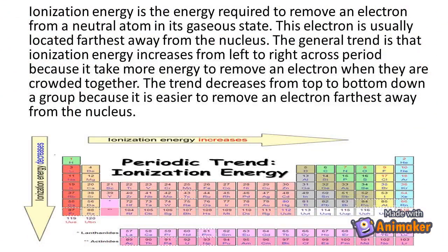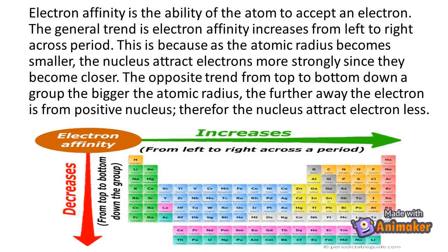Ionization energy is the energy required to remove an electron from a neutral atom in its gaseous state. This electron is usually located farthest away from the nucleus. The general trend is that ionization energy increases from left to right across a period, because it takes more energy to remove an electron when they are crowded together. The trend decreases from top to bottom down a group, because it is easier to remove an electron that is farthest away from the nucleus.